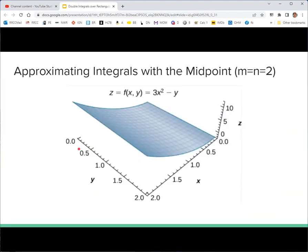Now you can get more comfortable with this by doing some approximations using a midpoint approximation, which means your xij star, yij star is just the midpoint of each rectangle. So let's look at this simple function, z is 3x squared minus y. And we want to integrate it where x goes from zero to two and y goes from zero to two.